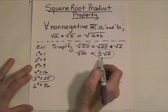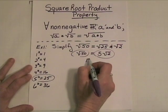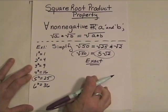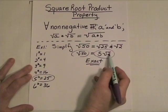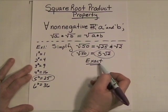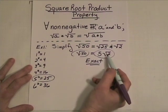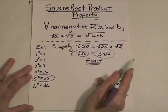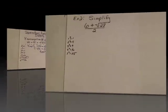These forms right here are known as exact forms. So, if you're ever asked to give the exact value and you have a radical that's an irrational number, you have to leave it under the radical sign in order for it to be exact. If you were to use a calculator on this, you will get a decimal approximation of the product. Let's take a look at another example.